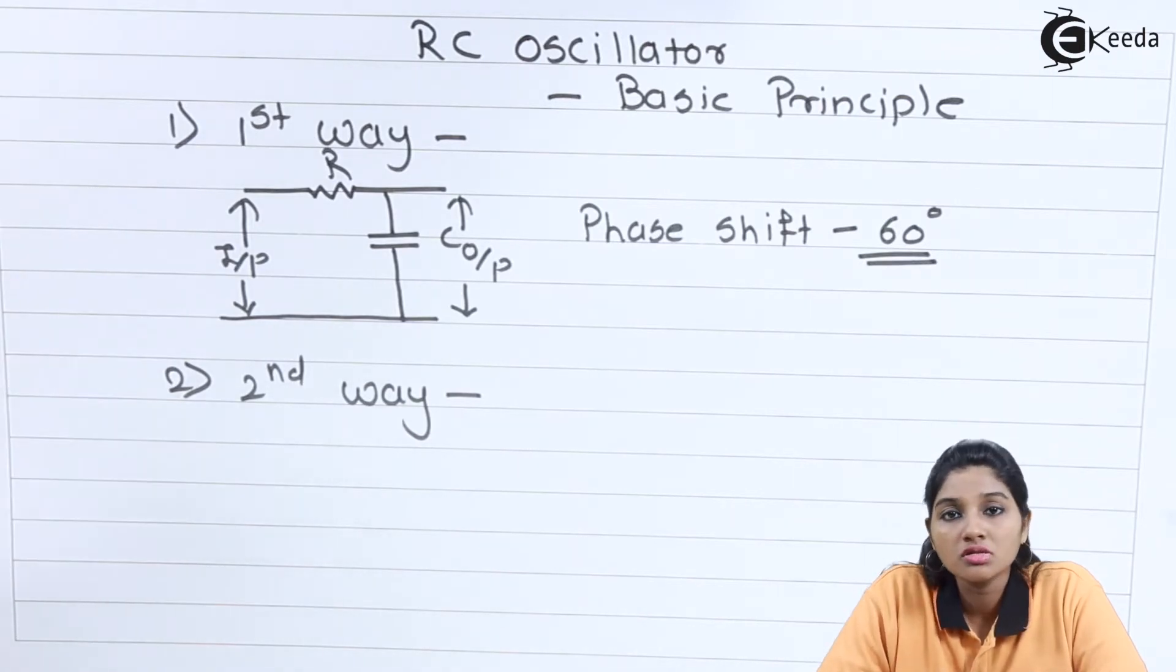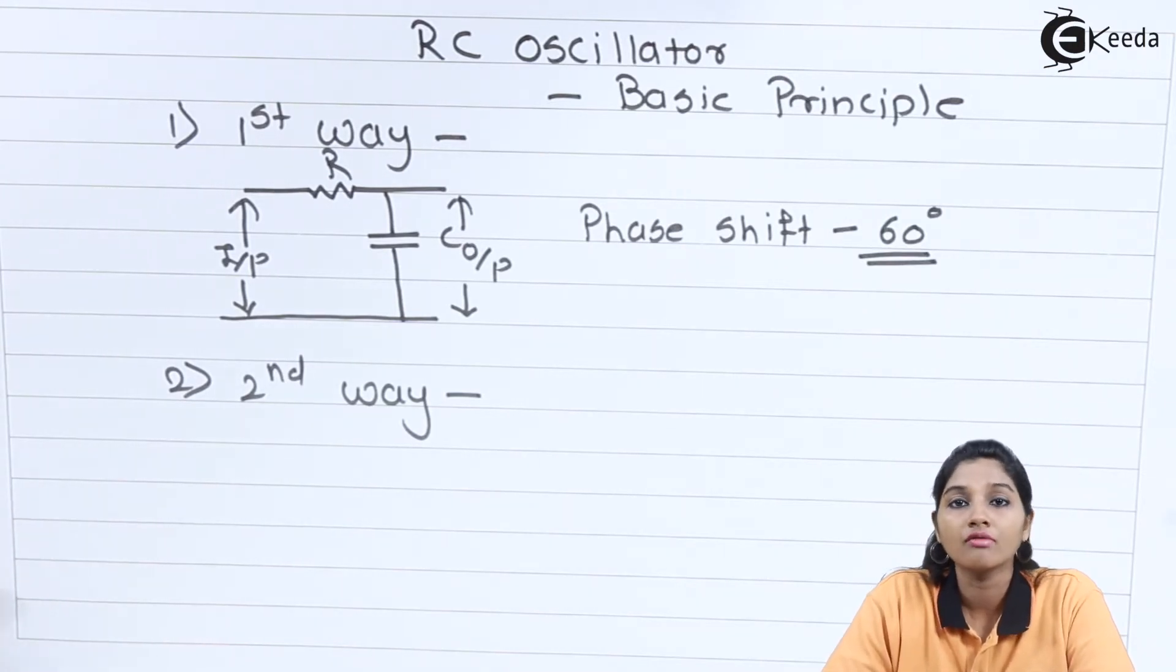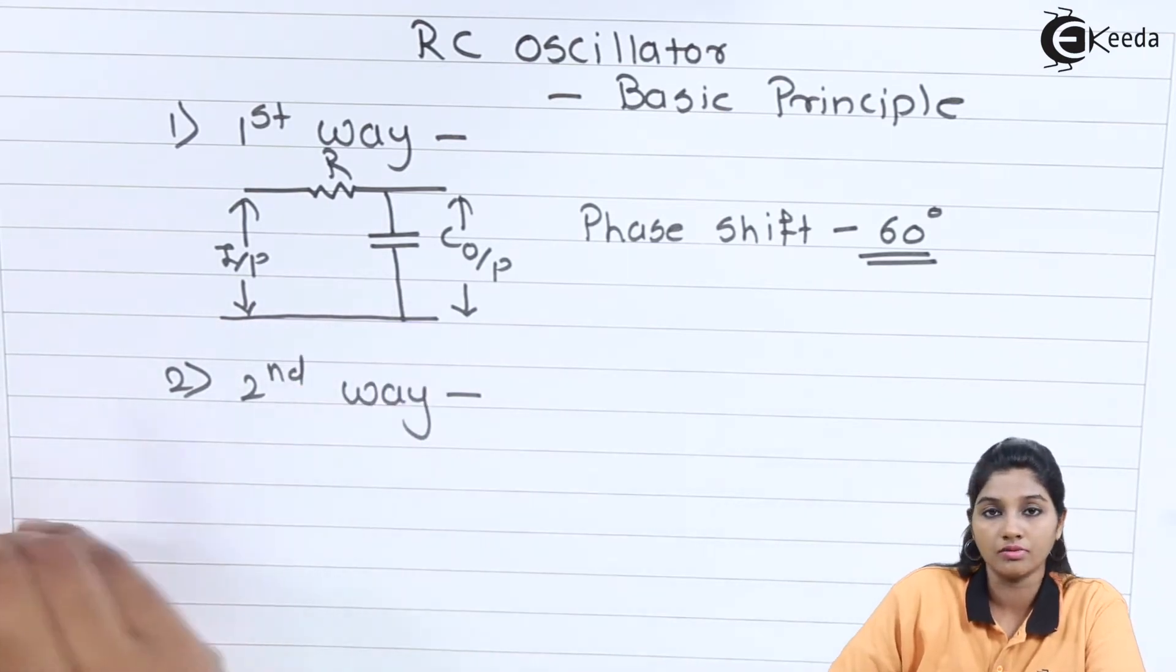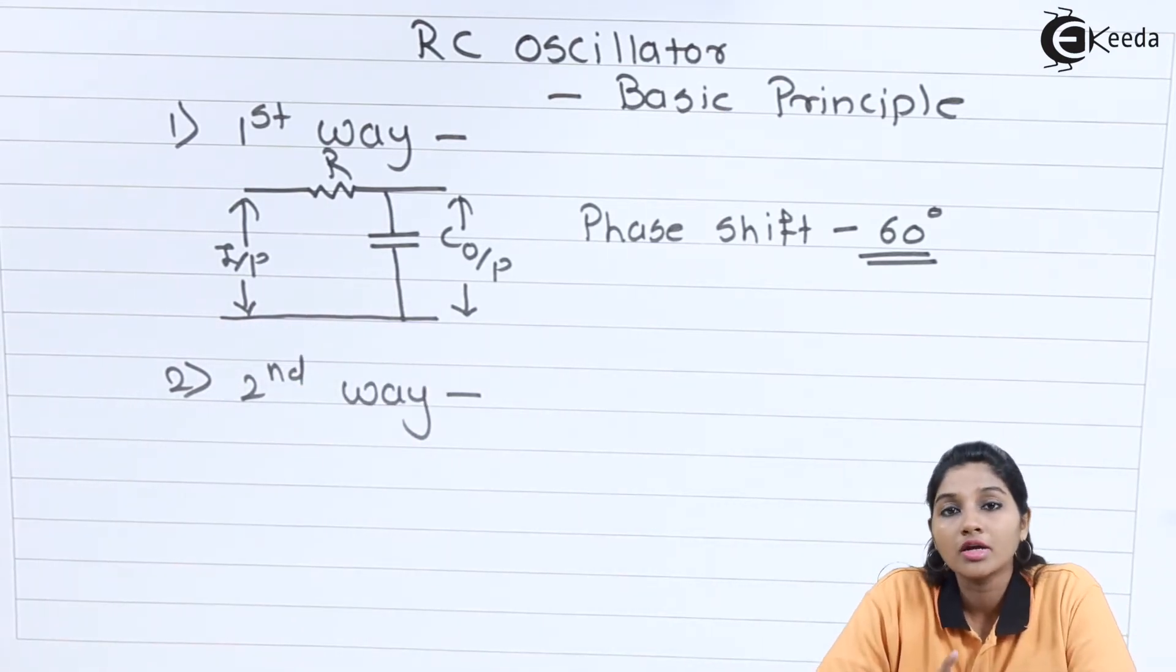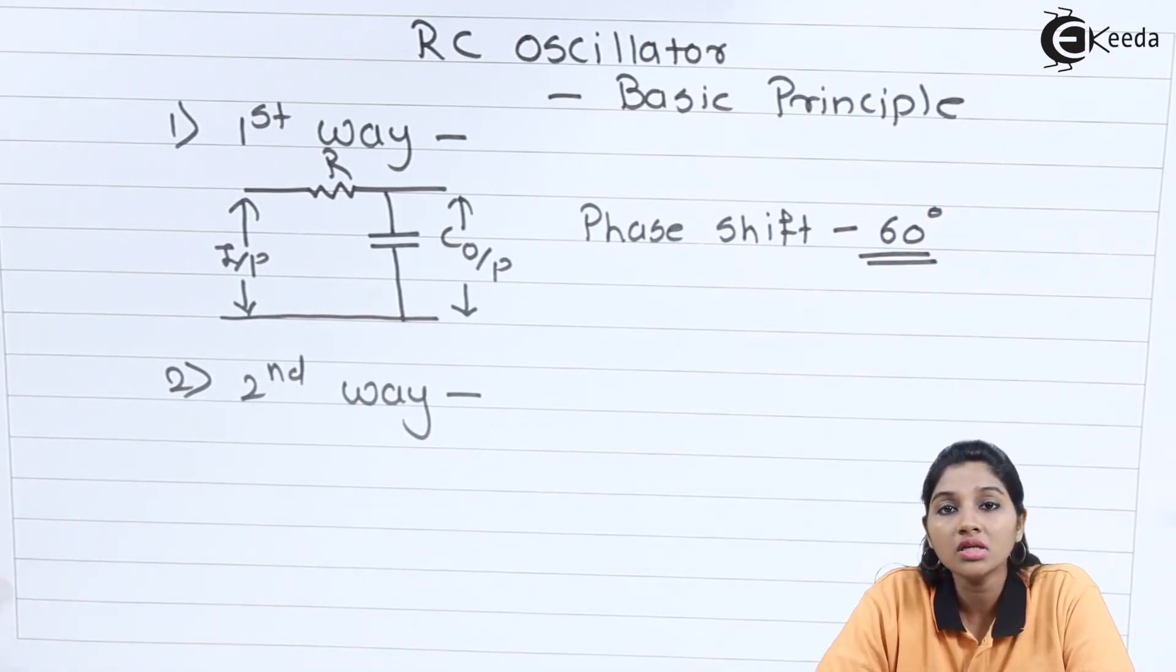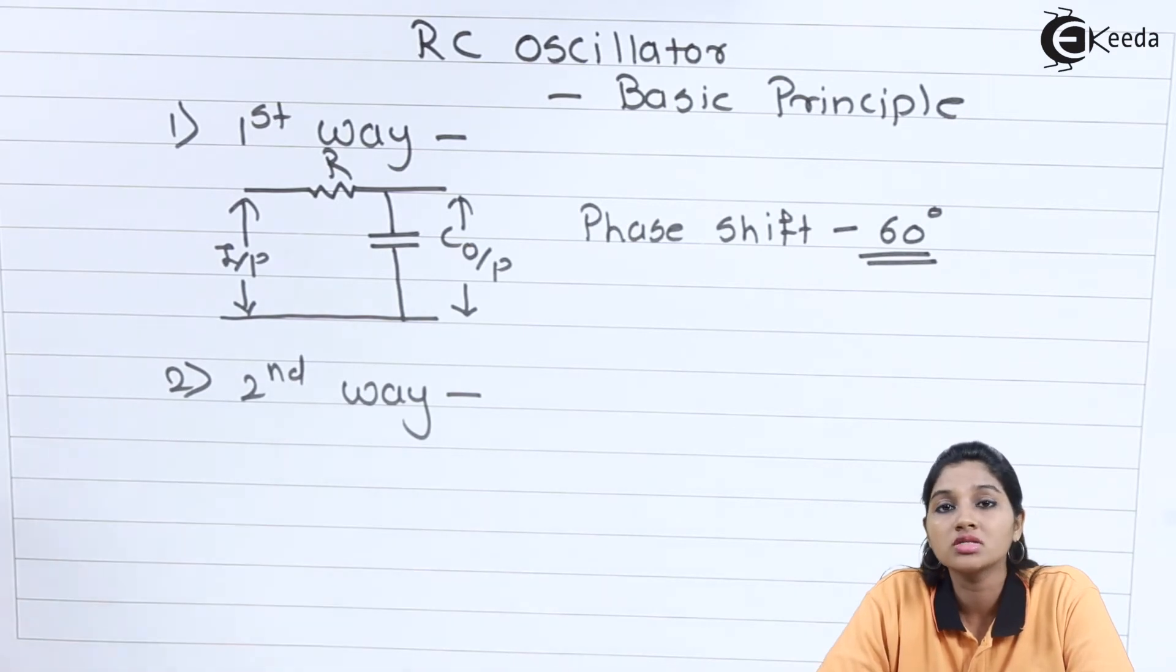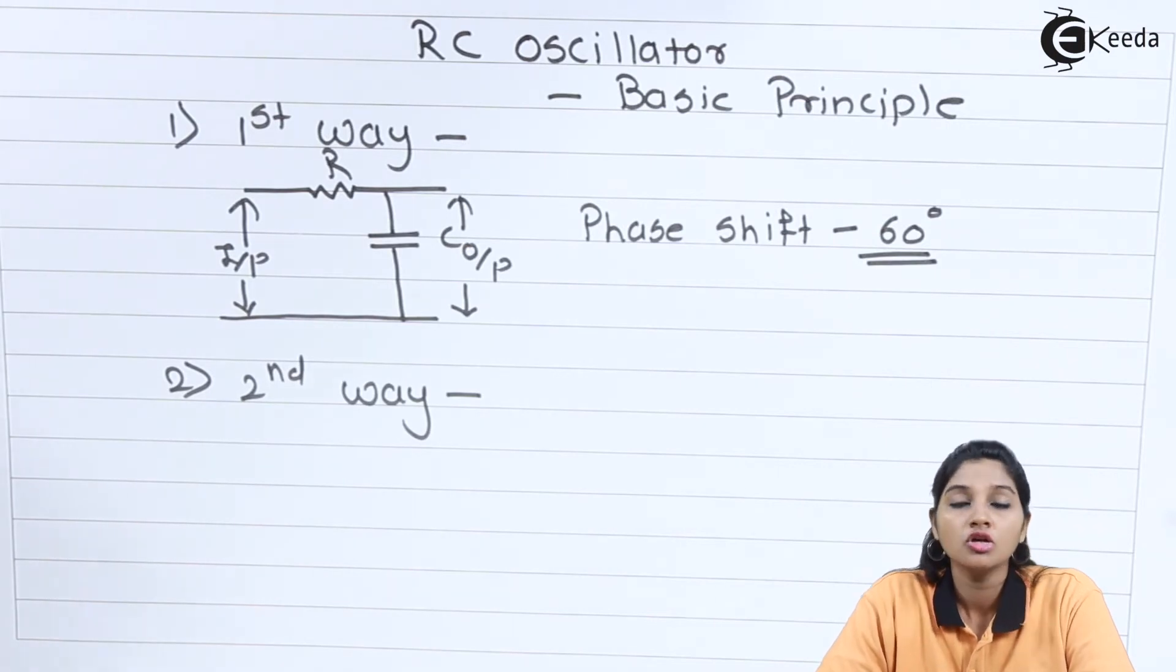The circuit which uses this principle is called as Wien bridge oscillator. But we are considering here only the RC phase shift network. The RC network provides phase shift of 60 degrees each. So if we use 3RC network between input and output and if the fraction of output is given back to the input through 3RC network, then it can provide a phase shift of 180 degrees. So this is the basic principle behind RC oscillator.